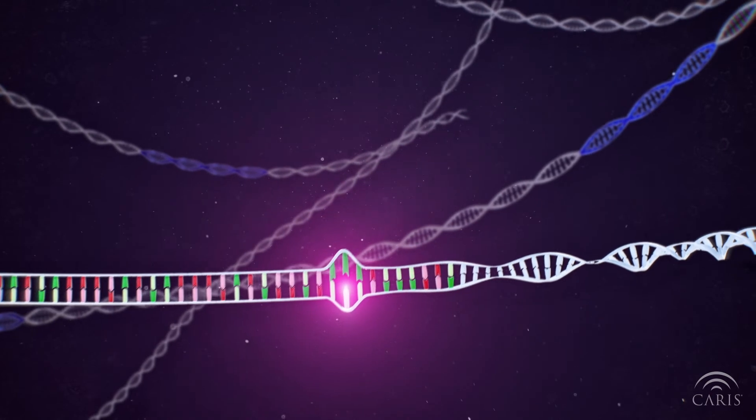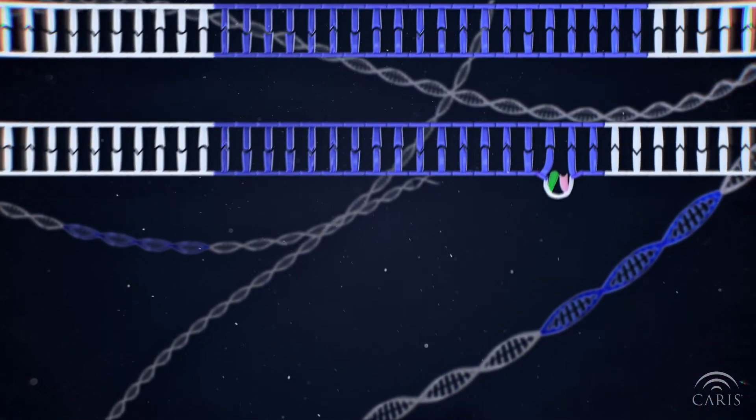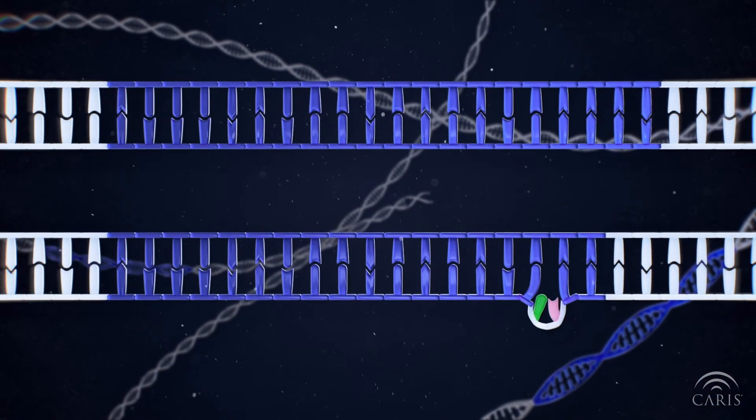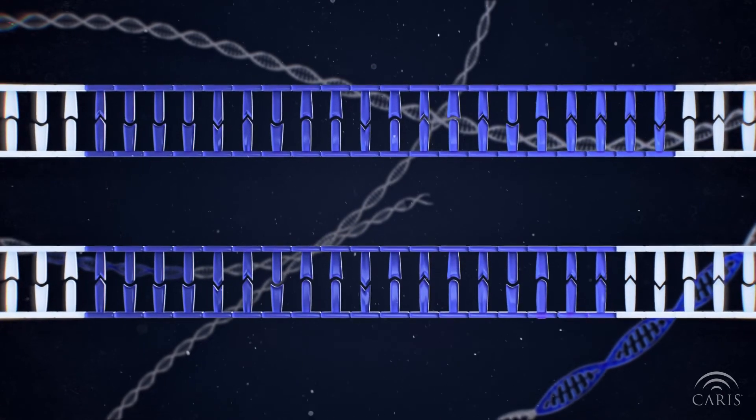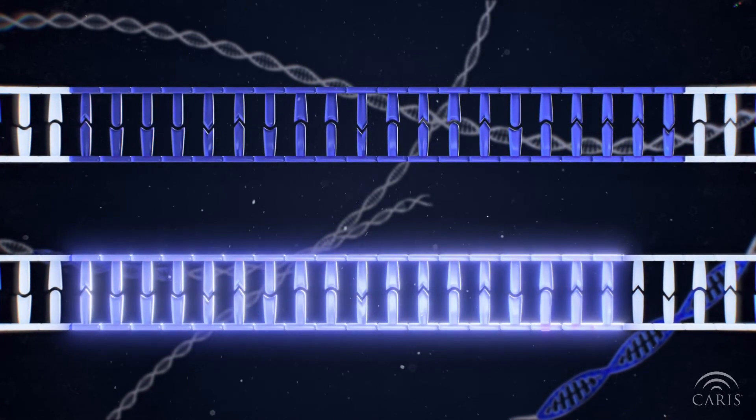Microsatellite instability, or MSI, occurs when the mismatch repair system is not working properly, and the misaligned DNA results in changes to the length of microsatellite regions.